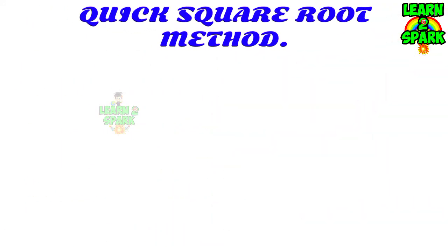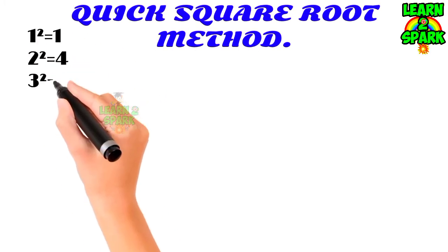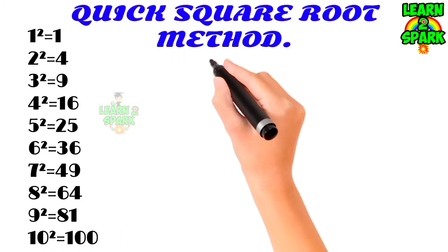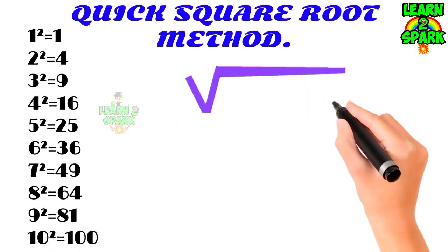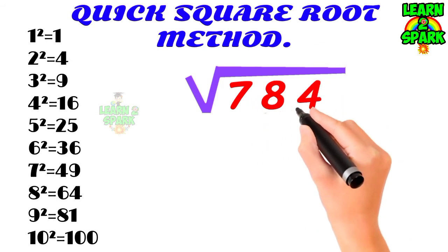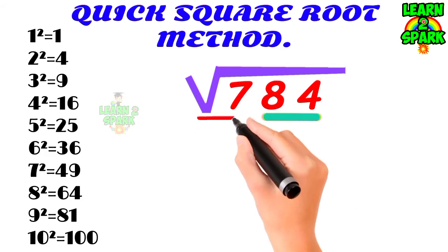Now, let's check out the quick square root method. Initially, you just write down the squares of the first 10 natural numbers if you cannot memorize. Let's begin with the 3 digit number 784. Split up the number into 2 groups, last 2 digits in one group and remaining in another.